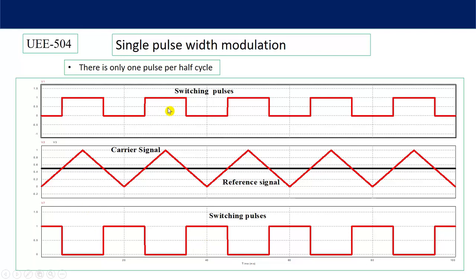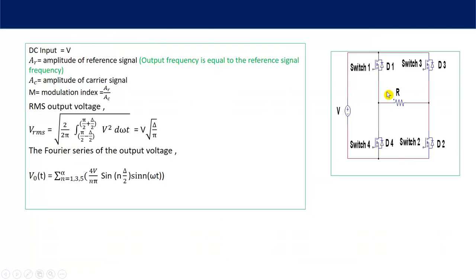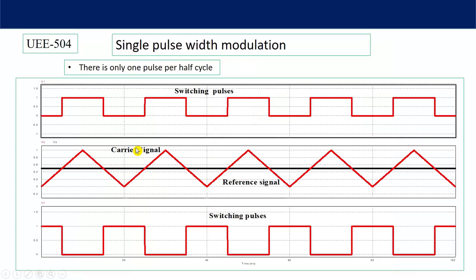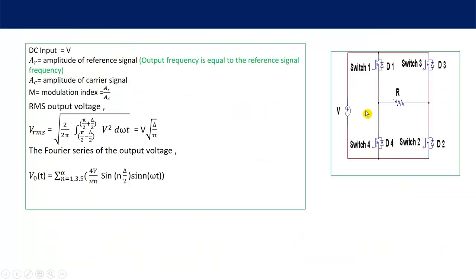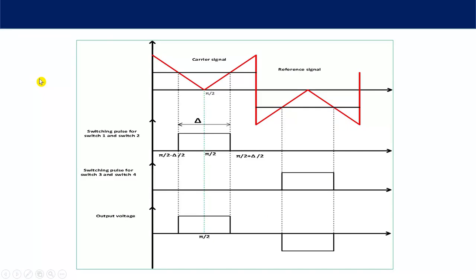These pulses are fed to switches 1 and 2, and the complementary pulses to switches 3 and 4 of the single phase full bridge inverter. When 1 and 2 are on, current flows in one direction giving positive output voltage equal to V. When 3 and 4 are on, negative output voltage is obtained. In single pulse width modulation, the pulse width is not 180 degrees — let us assume the pulse width is δ. To increase the pulse width, we increase the reference signal magnitude; to decrease it, we reduce the magnitude.